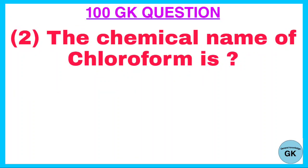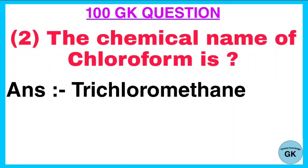Question. The chemical name of chloroform is? Answer. Trichloromethane.